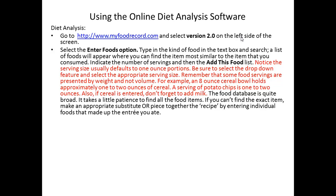Students also make errors in selecting the portion size. For example, you might have an 8-ounce cereal bowl, but if you enter 8 ounces of cereal, you've basically entered over half a box of cereal — so there is a difference in weight and volume. The food database at MyNATS is quite broad; it will take some patience and time to find the correct food item. If you can't find the exact item, you might have to find an appropriate substitute or enter individual items that comprise the recipe of the food you have selected.